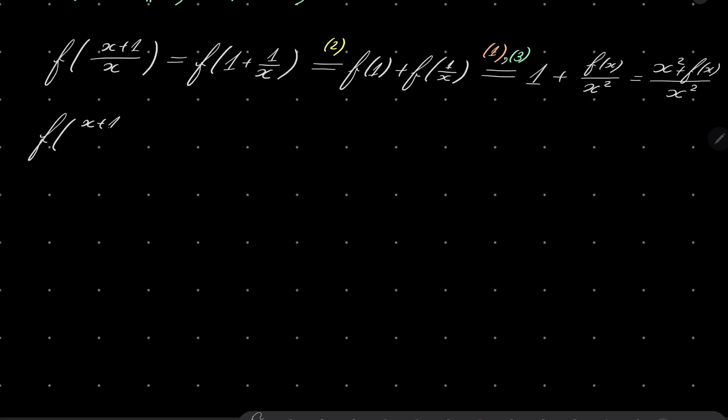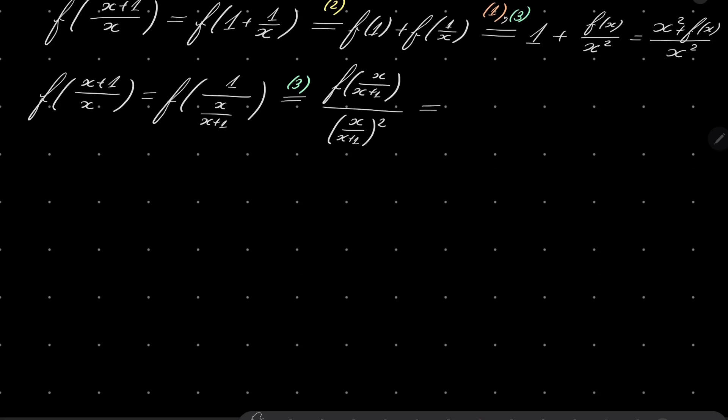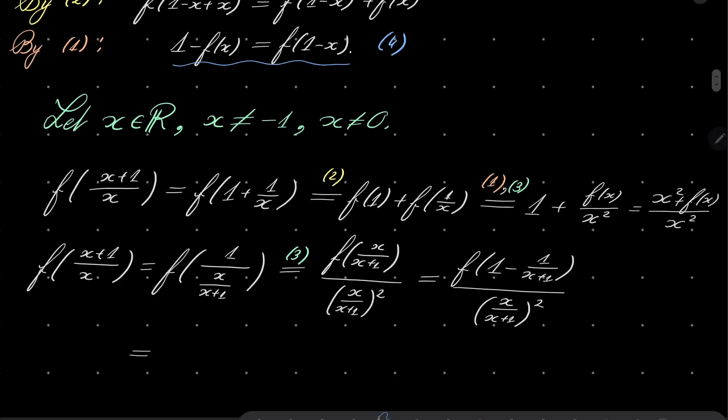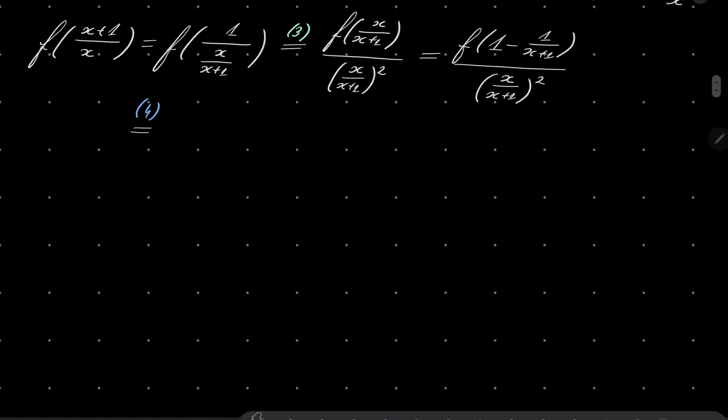But also notice that the very same expression can be written in a different way. It can be written as f(1/x over (x+1)). And now using condition number 3, f(1/something), it's f of that very something over this variable squared. And now notice that in the numerator we can write 1 - 1/(x+1) + 1/x over (x+1)².